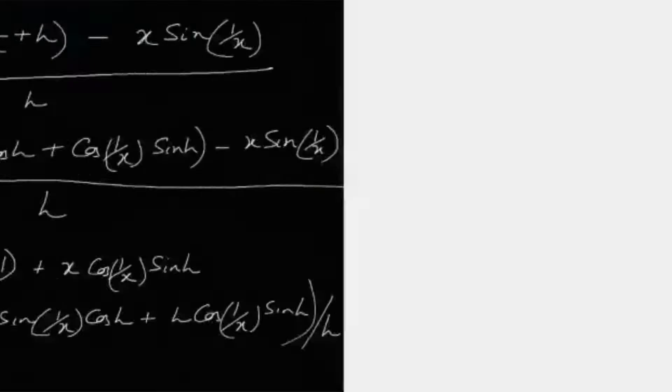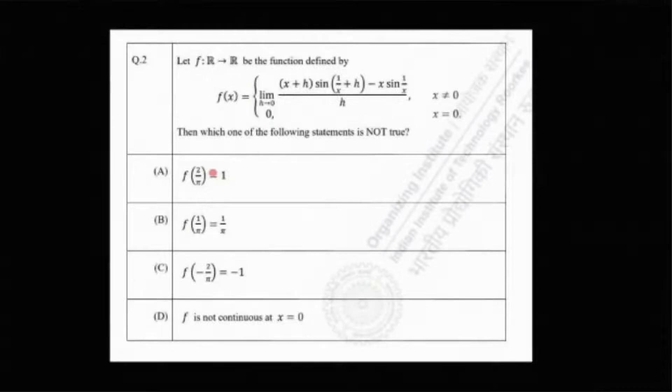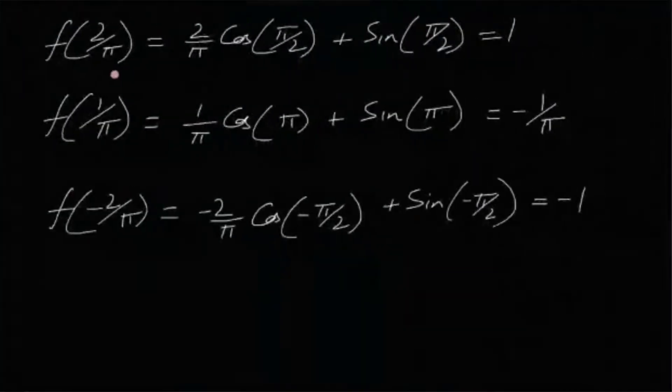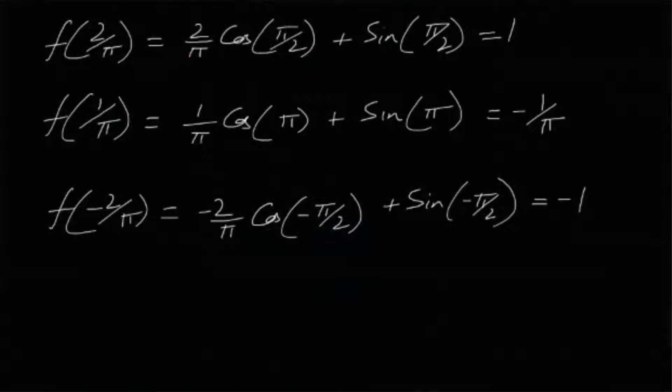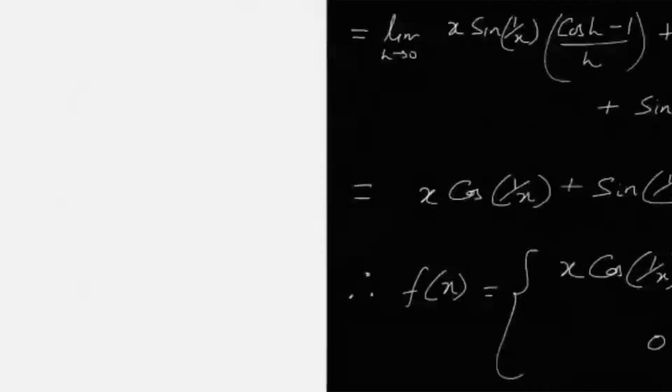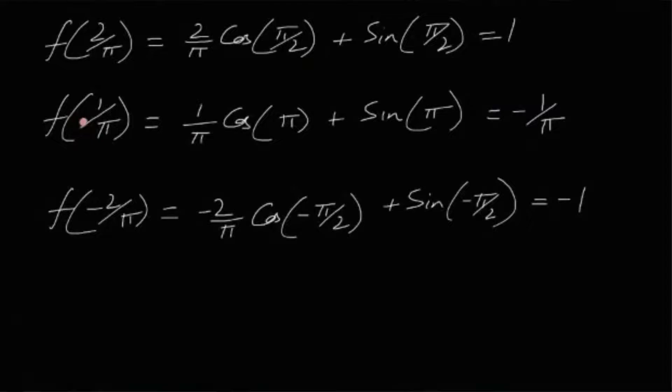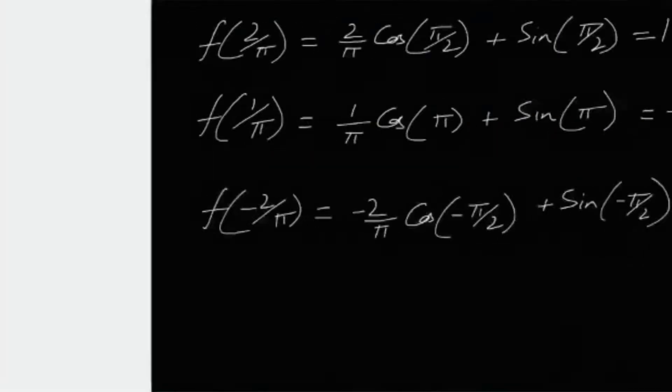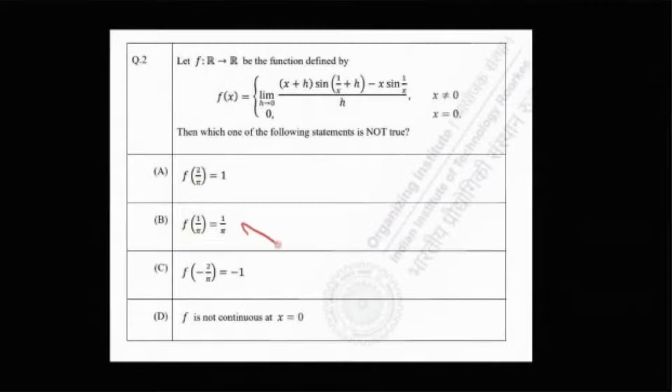Now if we plug in the values and check the given information: f(2/π), f(1/π), f(-2/π), let us see. f(2/π) if we feed that into the function gives the value 1 which is true, therefore option A is true. Option B, f(1/π) actually turns out to be -1/π but here it is given that f(1/π) is 1/π, that means this option is wrong, that means this is the correct answer to this question. At this moment we can stop.